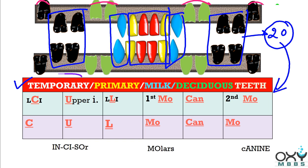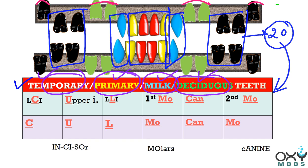Remember that temporary teeth are also called primary dentition, milk teeth, and deciduous teeth. So temporary, primary, milk, and deciduous are all the same thing.